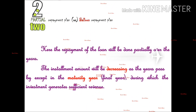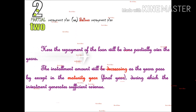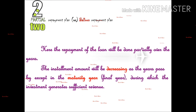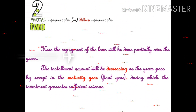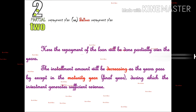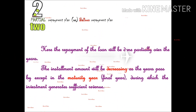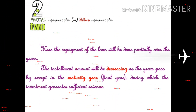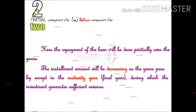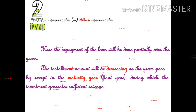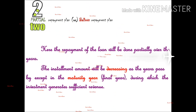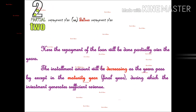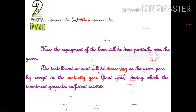The second method is the partial repayment plan. In a partial repayment plan, every year we have to pay an installment amount, but the last year requires paying the full amount. Here, the repayment of the loan will be done partially over the years, and the installment amount will be decreasing as the years pass by, except in the maturity year.